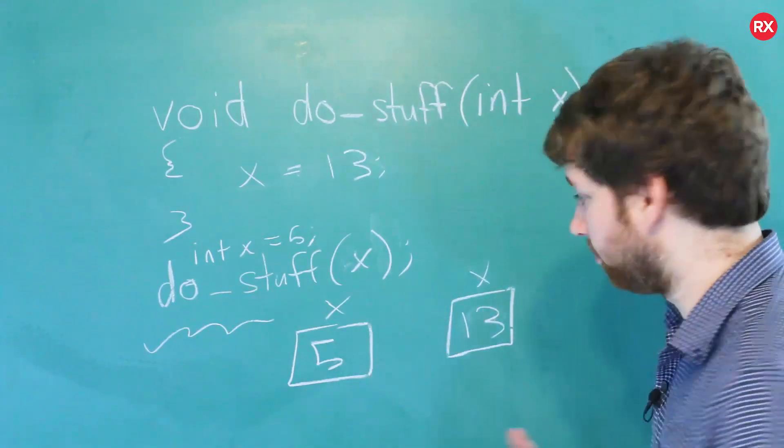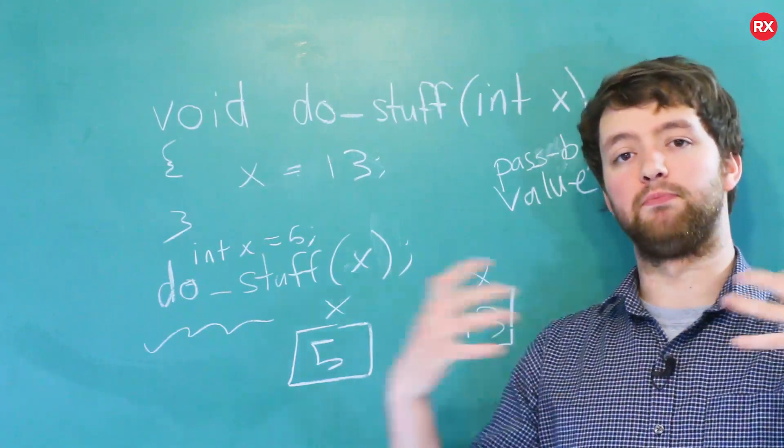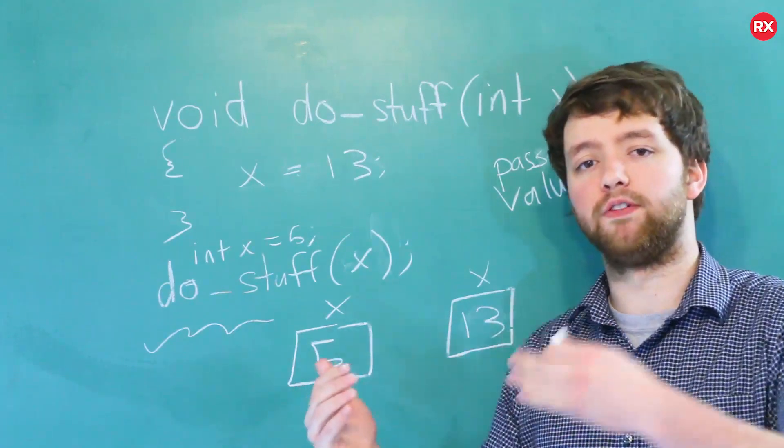Everything is passed by value, so this whole concept is known as passed by value. Now the one exception to this is arrays. So if you create an array, I'm hesitant to draw it out because I'll probably just mess everything up. If you create an array which contains multiple elements, when you pass an array to a function, it's not passed by value.